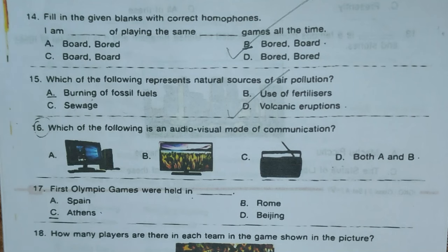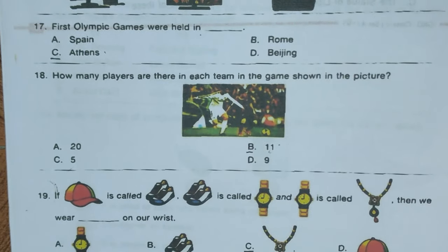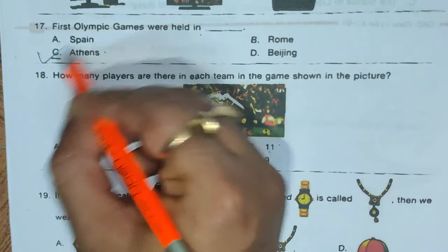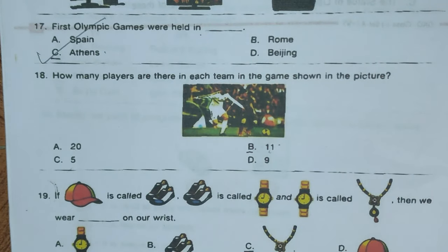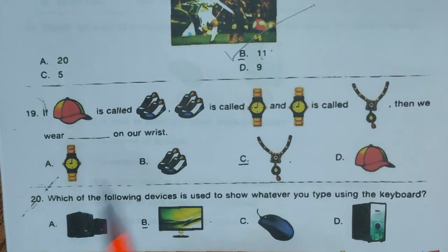Question 16: Which of the following is an audio-visual mode of communication? A) computer, B) television, C) radio, D) both A and B. Correct answer is D, both A and B. Question 17: The first Olympic Games were held in dash. Options: A) Spain, B) Rome, C) Athens, D) Beijing. Correct answer is C, Athens. Question 18: How many players are there in each team of the game shown in the picture? Options: A) 20, B) 11, C) 5, D) 9. Correct answer is B, 11, because the game shown is football.